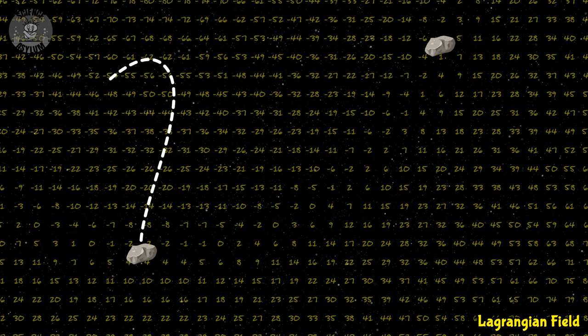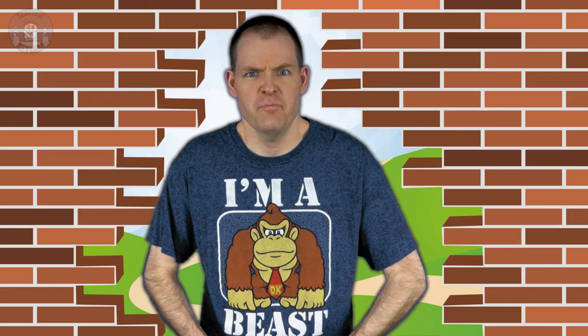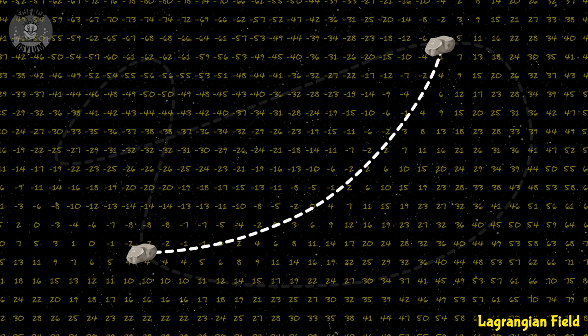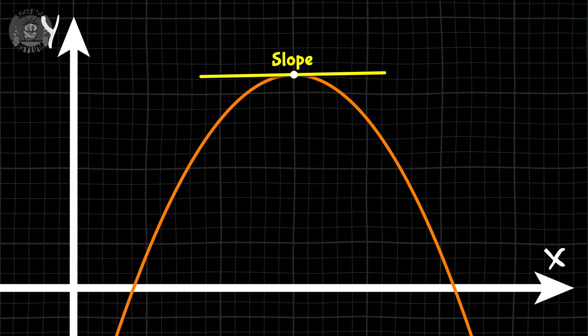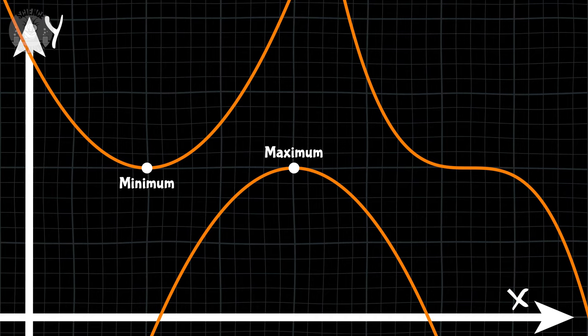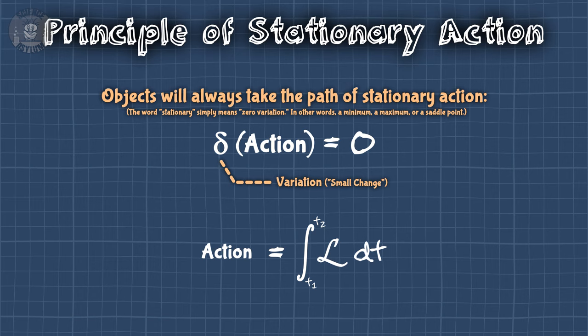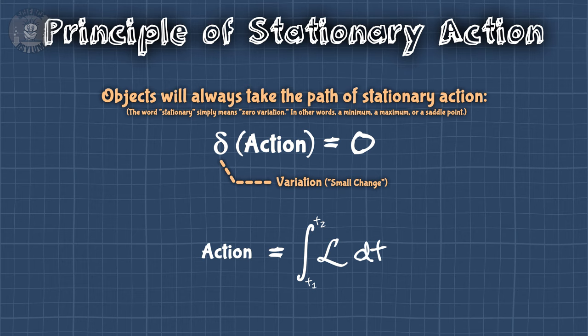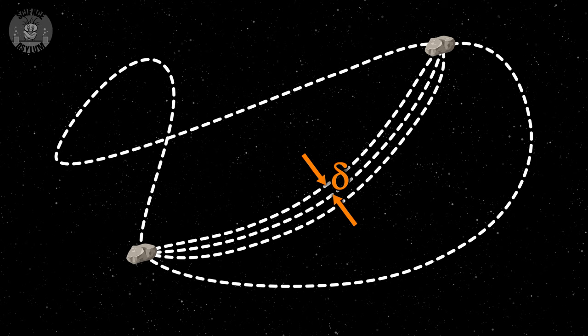If we map out all possible Lagrangians for an object across space, we can add the values along a possible path and get an idea of its efficiency. We call this efficiency the action, and it's a really big deal — the action is that pattern we're looking for. There are a lot of paths available, but the object only takes one of them: the path with the smallest variation in the action. This is the principle of stationary action. A change of zero can occur at a minimum, a maximum, or a saddle point — we call these stationary points. Paths around the real one show very little difference in their total action, so that's the path the object takes.